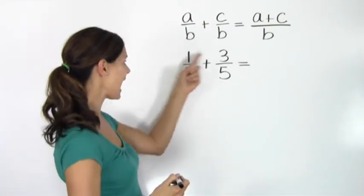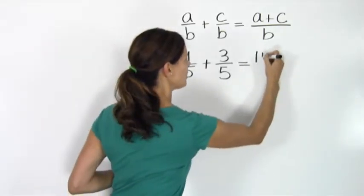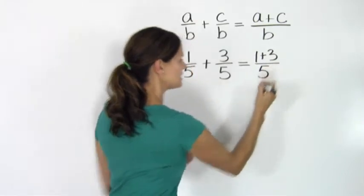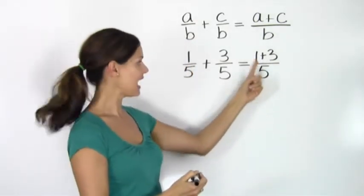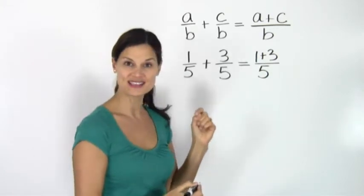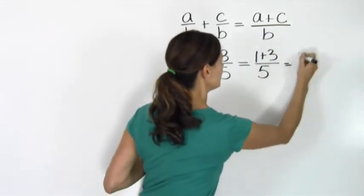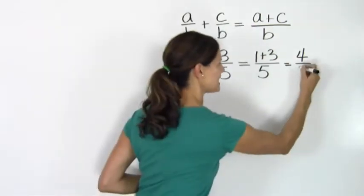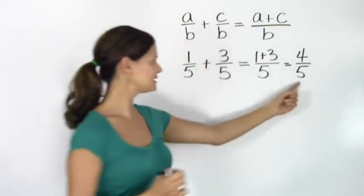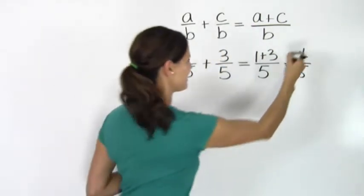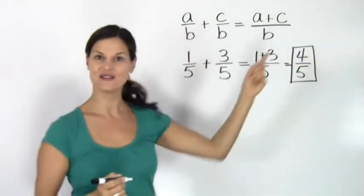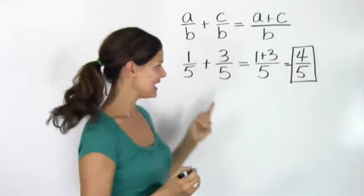So I simply add together their numerators, one plus three, and I keep my denominator five. And I do the work up here, one plus three equals four. So my numerator is four, and my denominator stays here as a common denominator of five. And the answer to one fifth plus three fifths is four fifths.